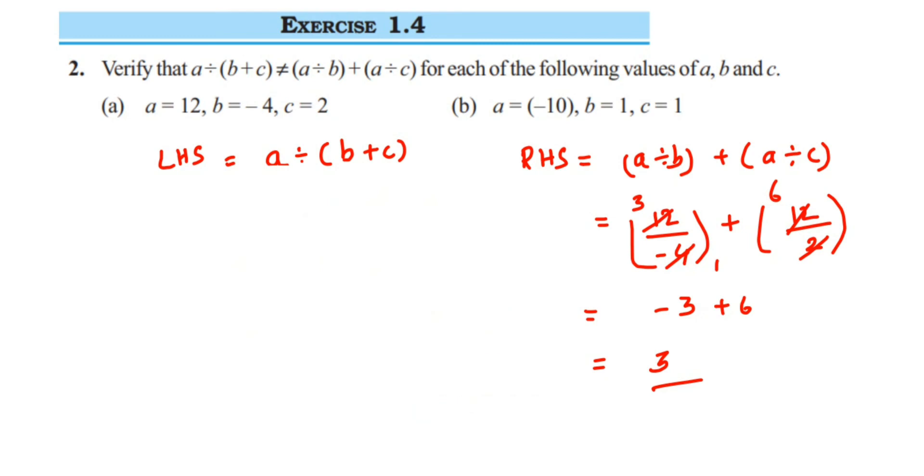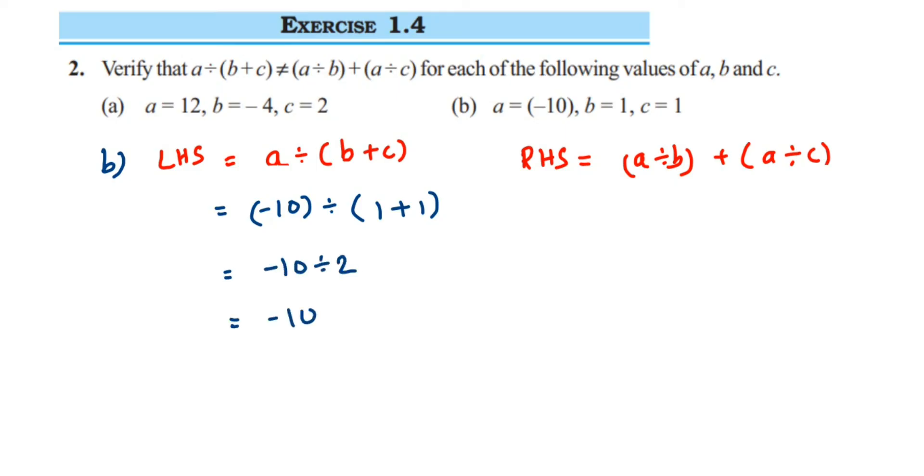So LHS part, I'm going to substitute the a value. a is -10 divided by b value is 1 and c value is also 1. 1+1 is 2, so -10÷2, which is -10÷2. I'm writing in fractional form. Cancel this: in 2 tables, 2 ones are 2, 5s are 10. This is equal to -5. Now the RHS part.